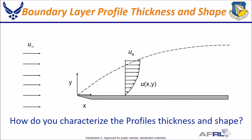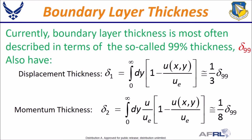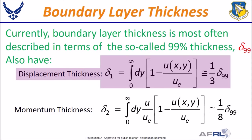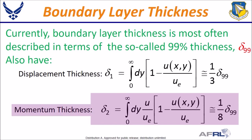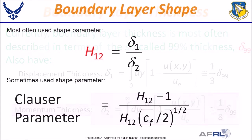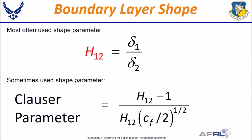When we refer to the velocity profile along the plate, we mean the velocity u at x for all y. The question we want to answer is: how do you characterize the thickness and shape of the velocity profile? Traditionally, the boundary layer thickness is most often described in terms of the 99 percent thickness delta sub 99 — the point where the velocity reaches 99 percent of u sub e. Besides the 99% thickness, other common thickness measurements are the displacement thickness and the momentum thickness, which are useful to calculate the shape parameter h sub 12 — not a true shape parameter in a mathematical sense, but still useful nonetheless.